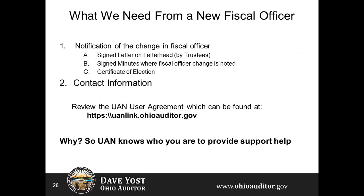Here is some homework that may or may not already have been done. We only need some help from you to know who you are and your entity, so that we can provide support. We will need from you as a new fiscal officer a letter on entity letterhead signed by your trustees notifying UAN of the change in fiscal officer, with important contact information such as name, phone number, and email address. You'll also want to include the location of the UAN computer. We will need a copy of the signed minutes where the fiscal officer change is noted, and a copy of the certificate of election for the fiscal officer if applicable.